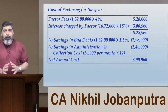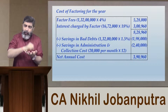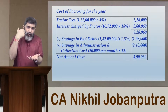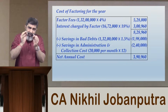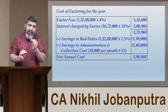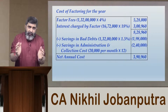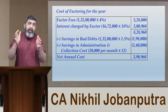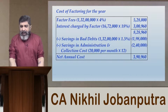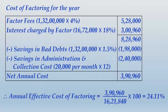An important precaution: when computing the final net annual effective cost of factoring as a percentage, the denominator will not be 16,72,000. Because the factor has actually advanced money after deducting the interest, the denominator must be the actual amount advanced — 16,21,840 — as shown on the screen. This is the main crux in this type of question.